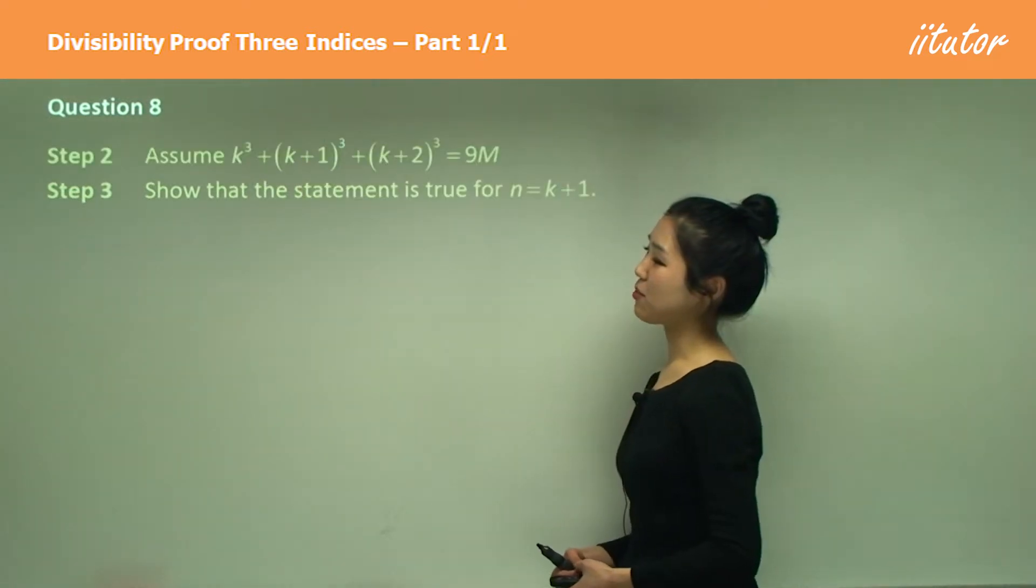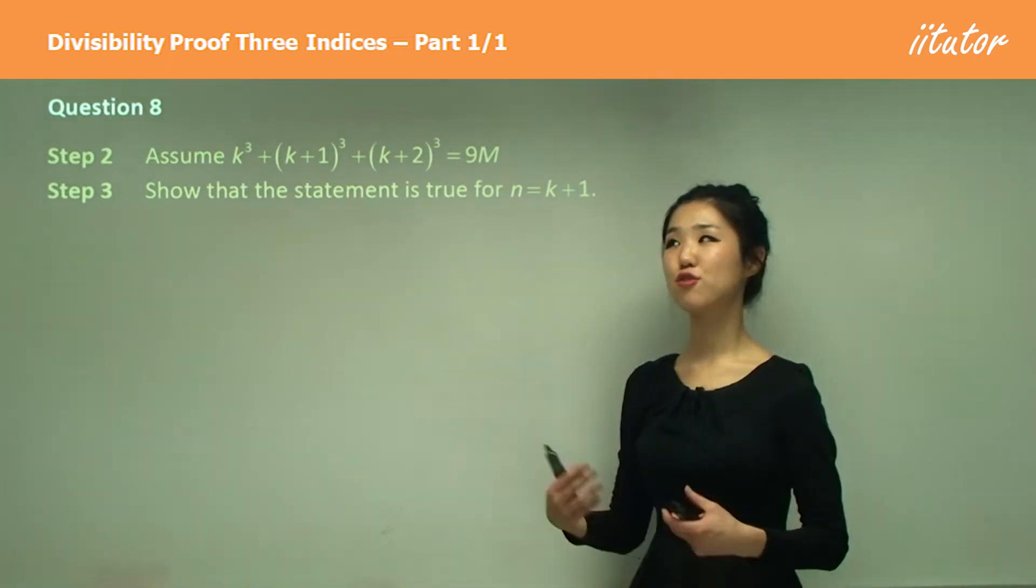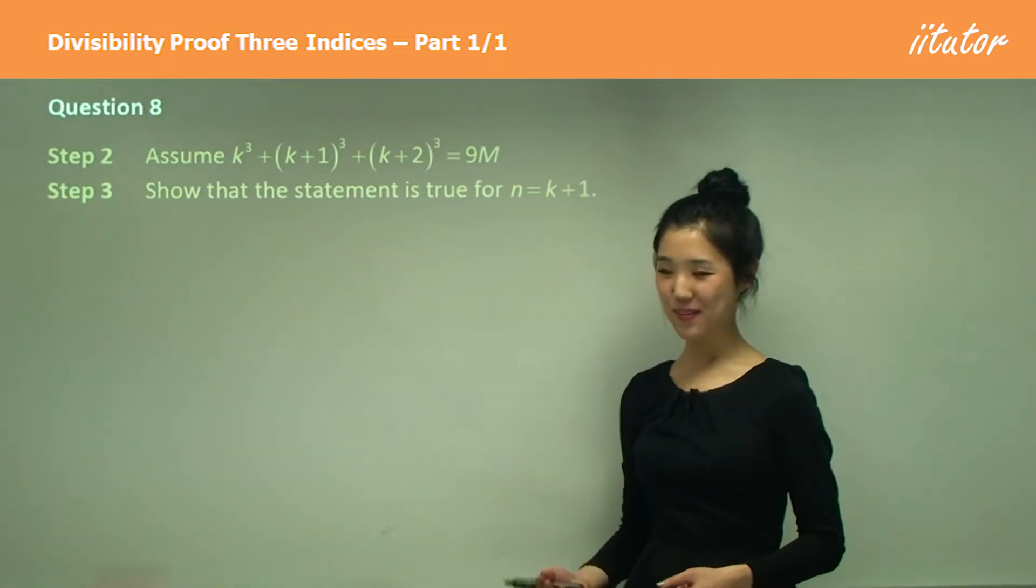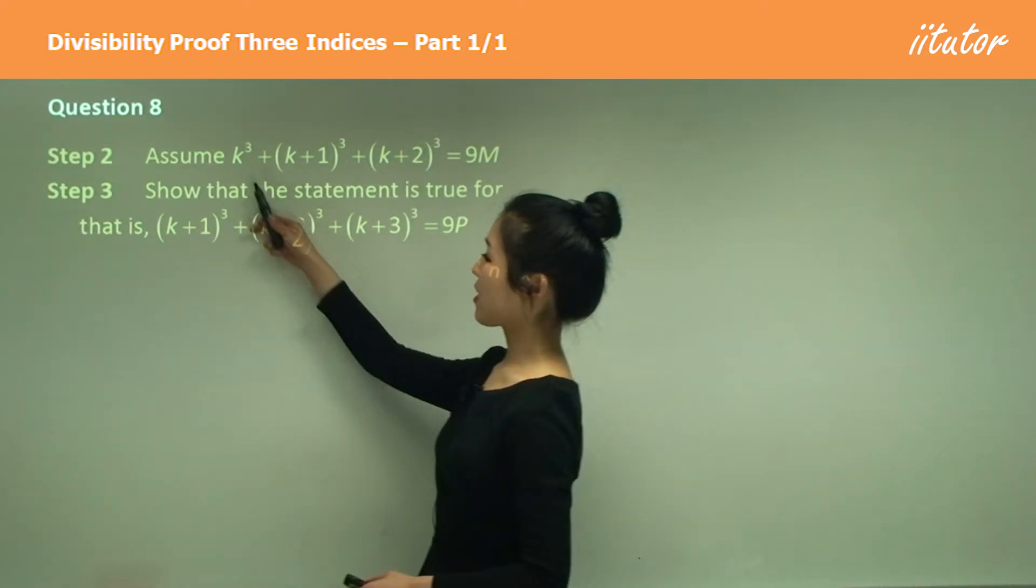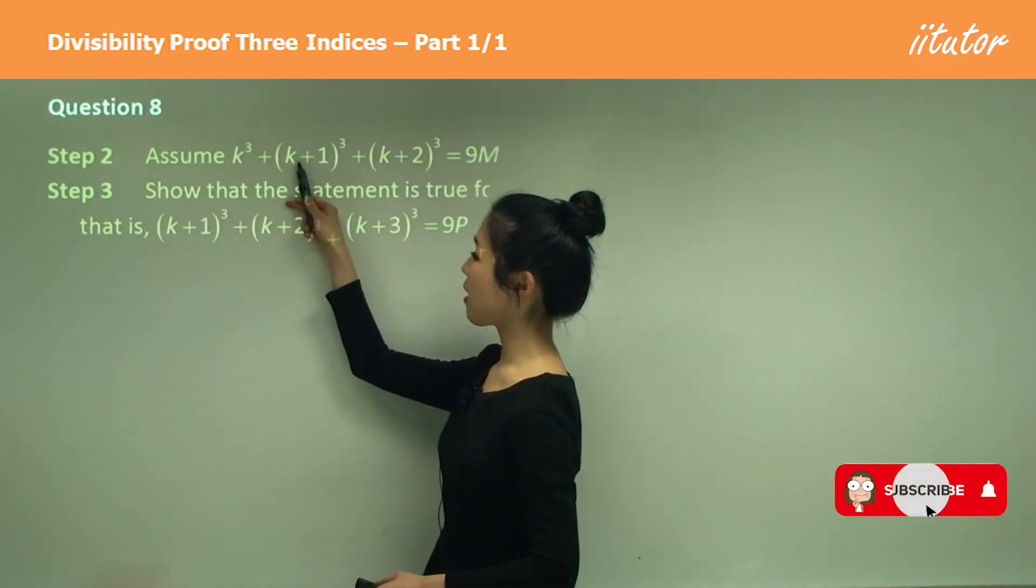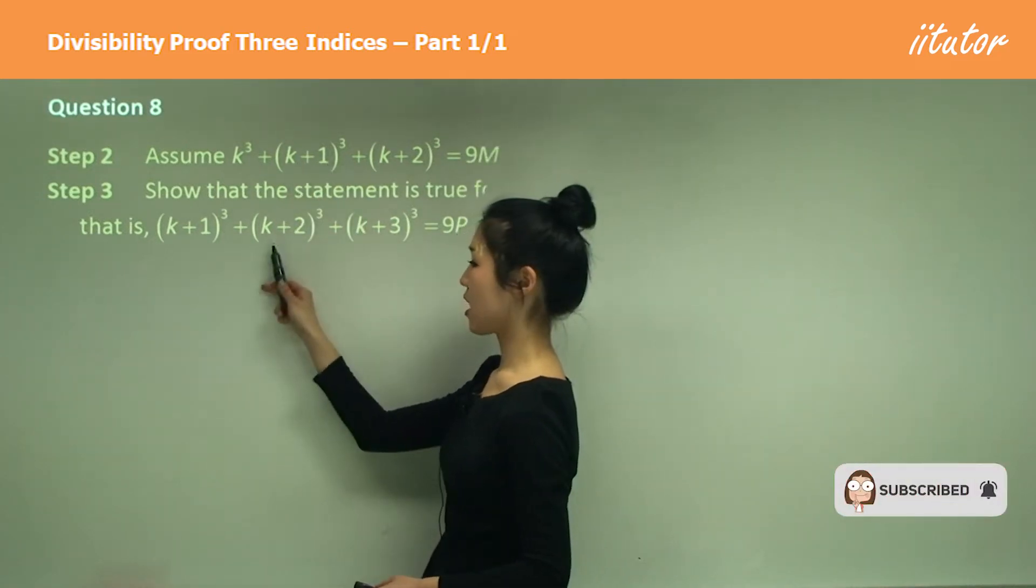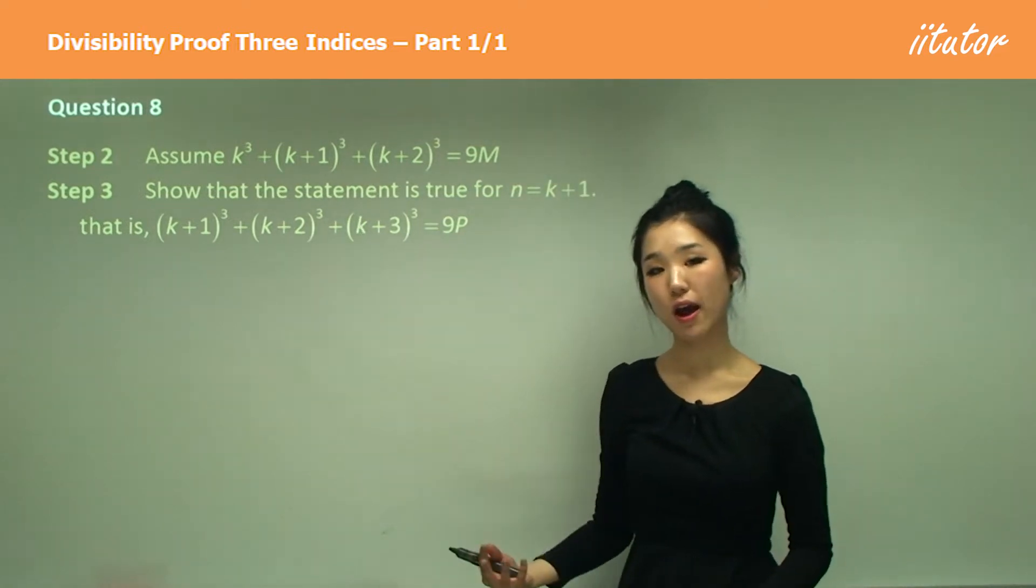And now we'll do step 3. Our assumption is over here and we'll show it's true for n equals k plus 1. So we're going to put all the n's as k plus 1. So this k will become k plus 1 cubed, this k will be k plus 2 cubed and k plus 3 cubed, which is going to be also divisible by 9.